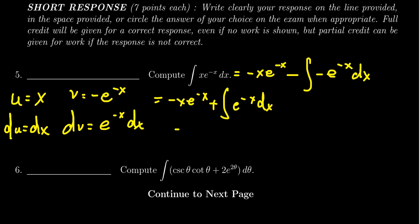So we end up with negative x e to the negative x minus e to the negative x plus a constant. And then we should write this on the line. Negative x e to the negative x minus e to the negative x plus a constant. And that is then the correct antiderivative.